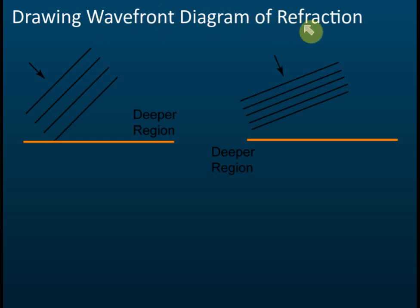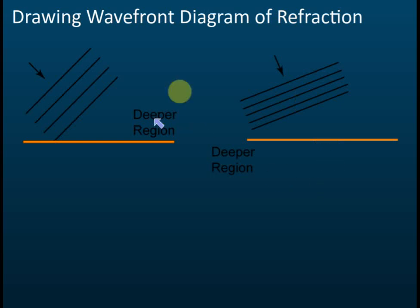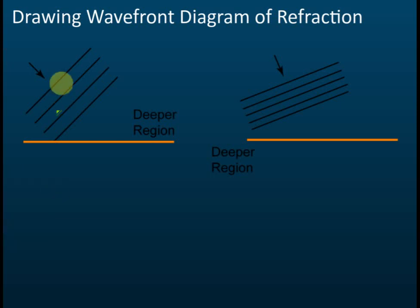We're drawing a wavefront diagram of refractions — this is from a deeper region to a shallower region, and this is from a shallower region to a deeper region. Let's start with the first one: from deeper to shallower regions. The first thing you need to do is draw guide lines for the directions of the wave. Let me use green color for the directions.